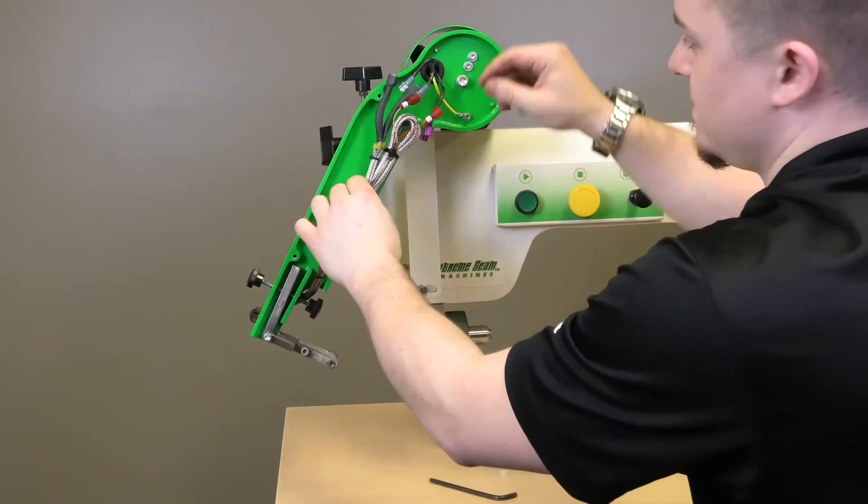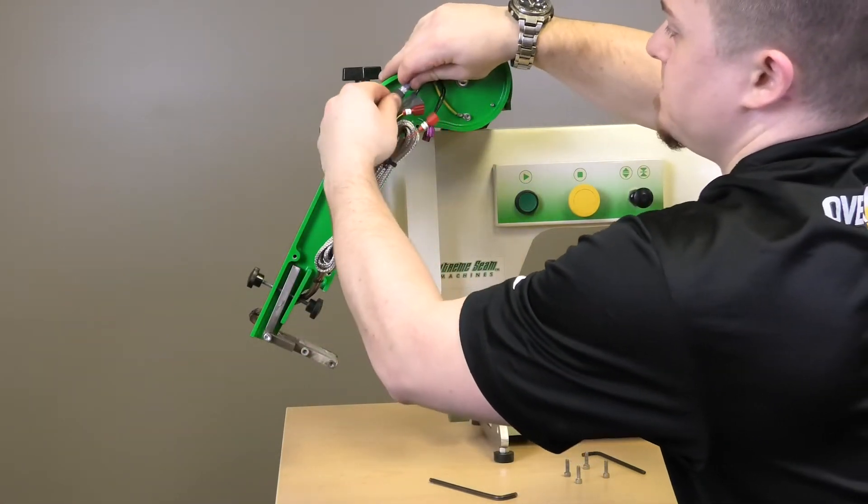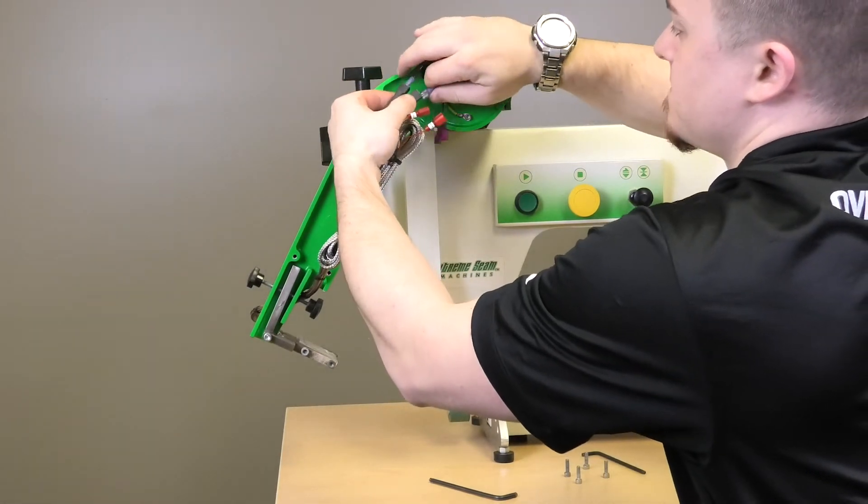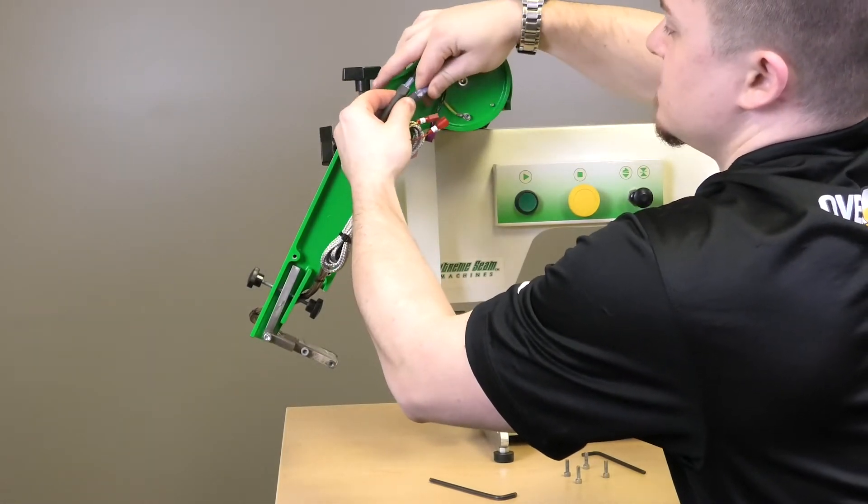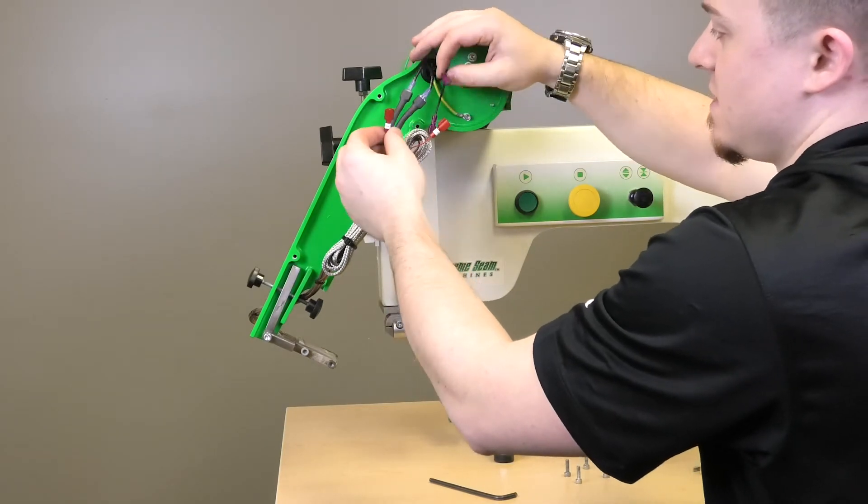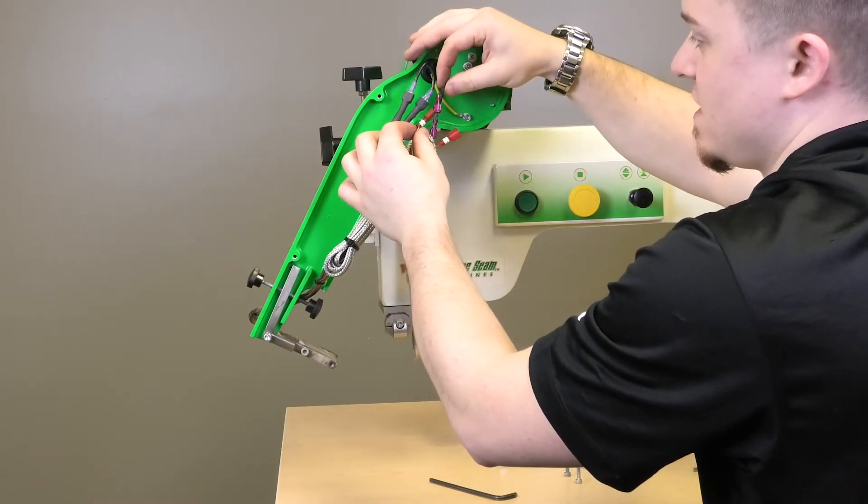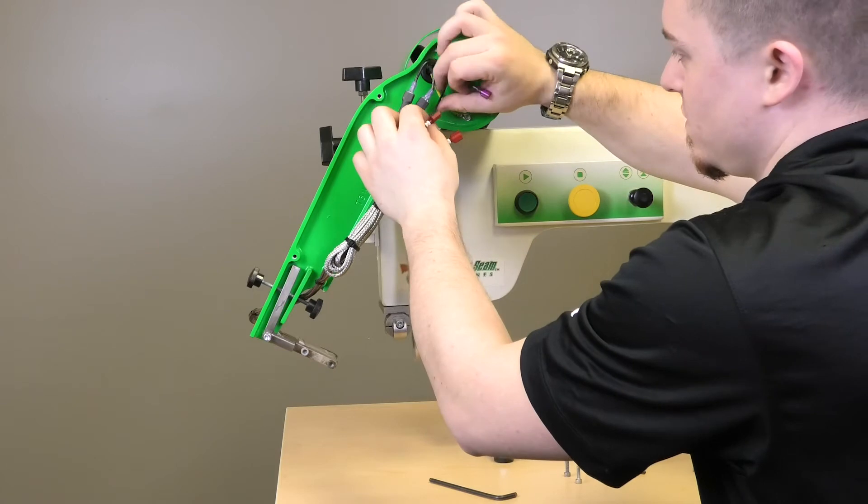Wrap it around. The power leads can go in either way. Most important is to make sure the thermocouple wires, you have two going to two and one going to one.